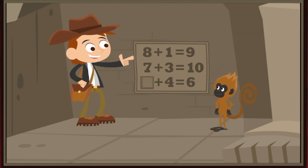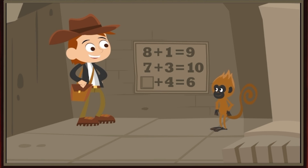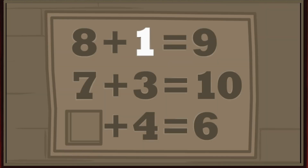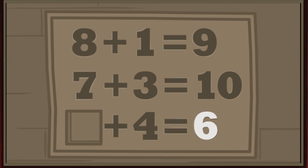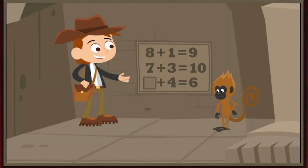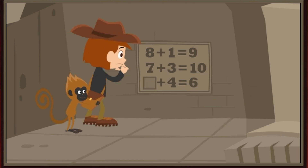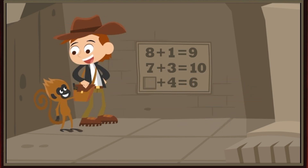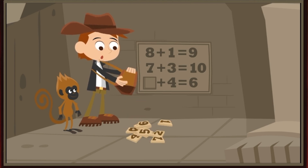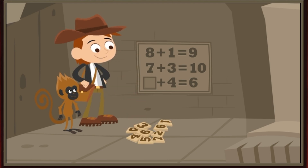Look! There are three number sentences carved into the wall of the temple. Eight plus one equals nine, seven plus three equals ten, and blank plus four equals six. See? There's a notch in the wall where the missing numbers should go. Good thinking, Scout! We can use the number stones we found in the Chamber of Lost Numbers to fill in this number sentence.